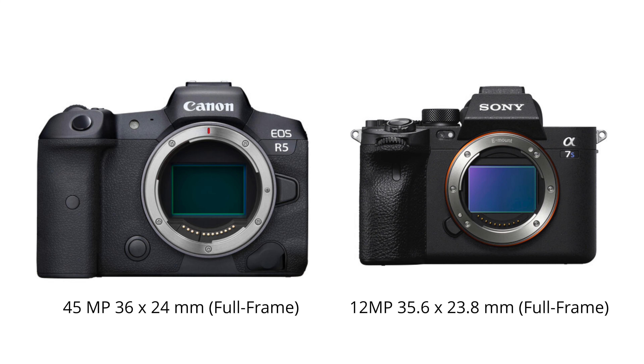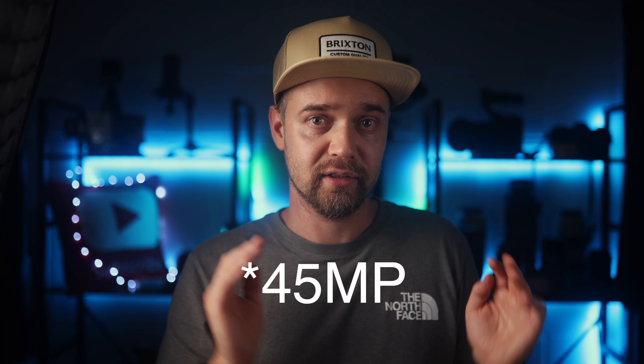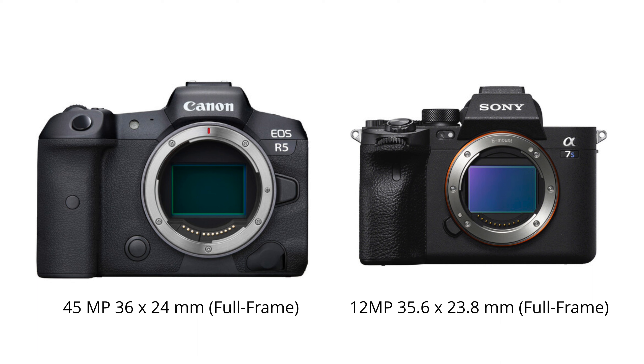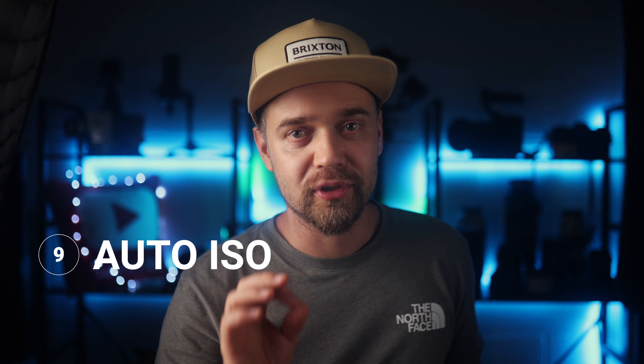Now let's talk about how sensor pixel size affects ISO and noise. With a bigger pixel you get better sensitivity to light. If you compare two full-frame cameras (36×24mm), one with 12 megapixels and one with 48 megapixels, every physical pixel on the 48MP sensor is four times smaller and gathers less light. This is why I can't use my Canon R5 with 45 megapixels above ISO 5000, while the Sony A7S III with just 12 megapixels has phenomenal low-light performance.